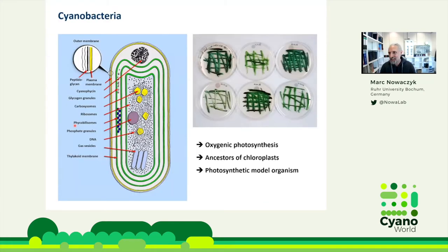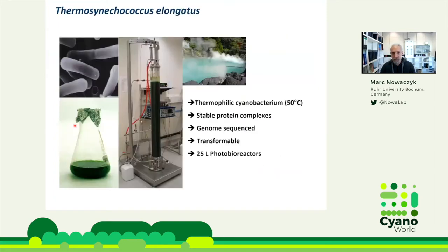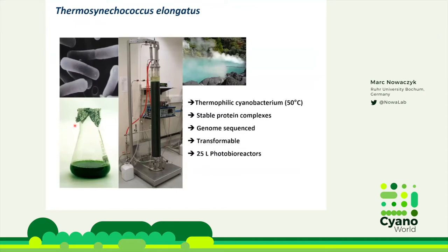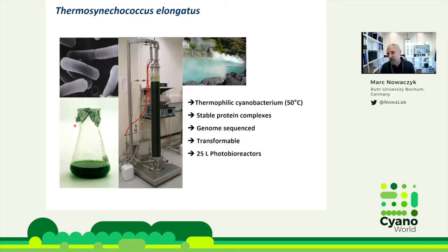Cyanobacteria are fantastic organisms, and I'm particularly interested in them because they perform oxygenic photosynthesis. We are working with the thermophilic cyanobacterium Thermosynechococcus elongatus. It grows at a temperature optimum of about 45 to 50 degrees Celsius, and the main reason for us to work with this organism is that you can isolate really stable protein complexes. The genome is sequenced, and in principle you can also do genetic modifications, but it's a little bit more tricky compared to Synechocystis, for example.